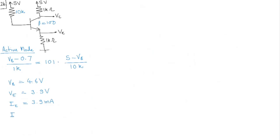And therefore, Ic is going to be equal to 100 divided by 101 times 3.9 milliampere, and that turns out to be 3.86 milliampere. And therefore, Vc turns out to be 5 minus 3.86 milliampere times 1k. And that's equal to 1 point, oops, I'm sorry for that. Well, 1.14 volts.